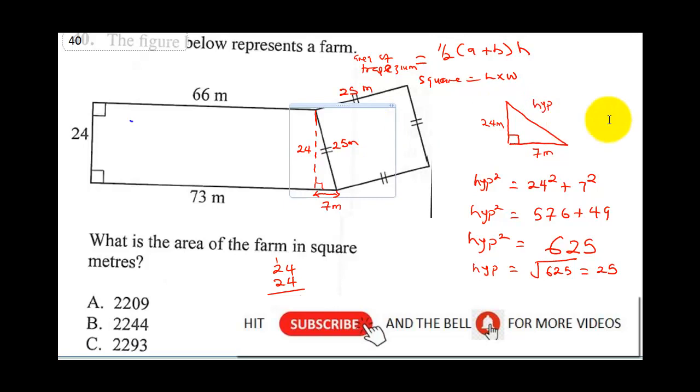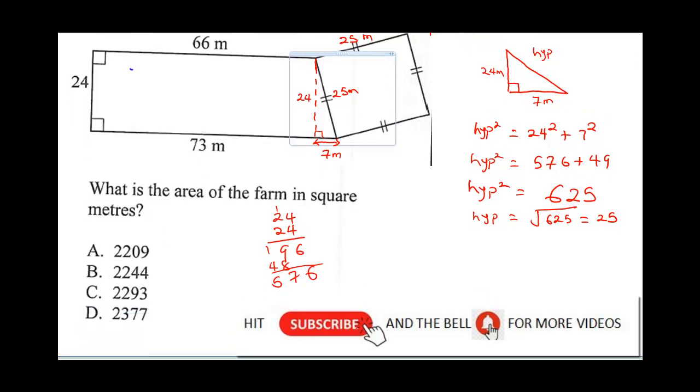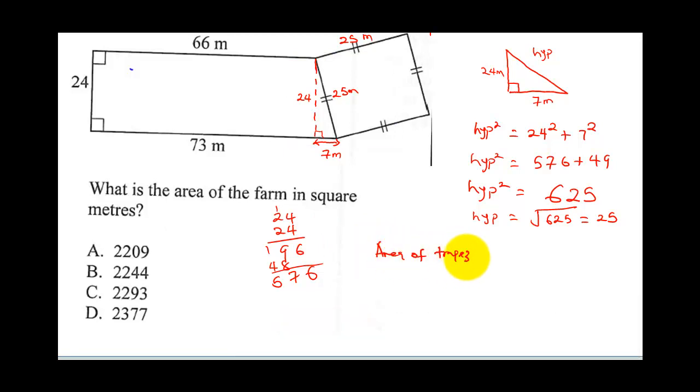So with that, we can now find the area of the shape. How do we find the area of the shape? It's going to be area of trapezoid plus area of square. So this is going to be half times the sum of the parallel sides, that will be 66 plus 73 times 24, plus area of square will be 25 times 25. So this is going to be 2 into 24 will be 12. 66 plus 73, 6 plus 3 is 9, 6 plus 7 is 13. So 139 times 12 plus 625.